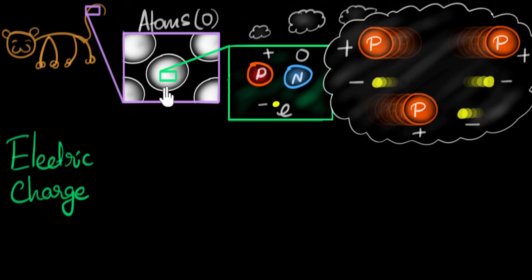And that's the reason why most of the stuff around that you see are electrically neutral because they have equal number of protons and electrons. And that's the reason we don't get to see this electric force in action at large distances or on large objects. That's mostly because things are normally neutral.